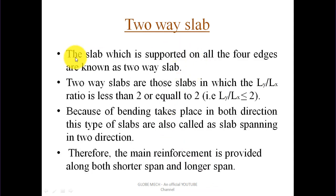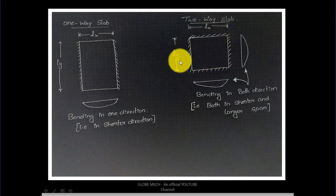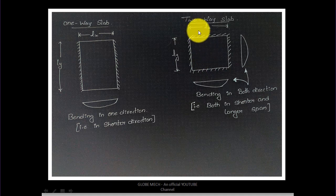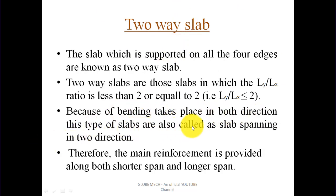Next, two-way slab. Slabs supported on all four edges are known as two-way slabs. As you can see in the figure, this slab is supported on all four sides. Two-way slabs are those slabs in which the ly by lx ratio is less than or equal to two. When ly by lx is less than or equal to two, we design the slab as a two-way slab because bending takes place in both directions. This type of slab is also called a slab spanning in two directions, and the main reinforcement is provided along both the shorter span and the longer span.